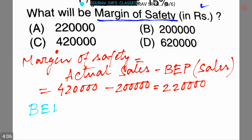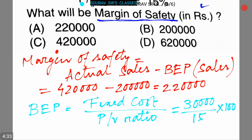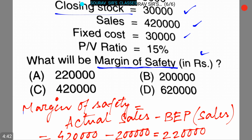The BEP sales equals fixed cost divided by PV ratio, which is 30,000 divided by 15 into 100, equals 2,00,000. So the margin of safety will be rupees 2,20,000 and option B is the correct answer. Please subscribe to the channel.